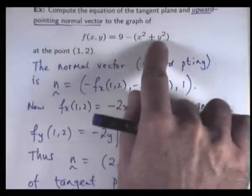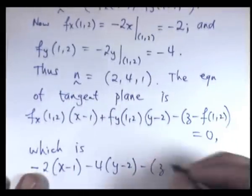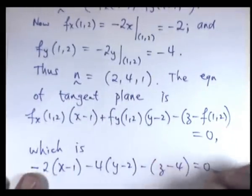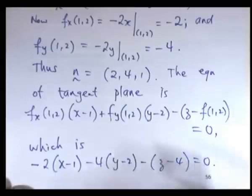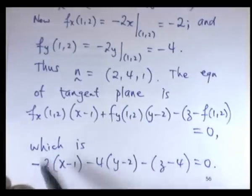So f at (1, 2), if I go up here, sub in x equals 1, y equals 2, I'll get 4. So this is the equation then of my tangent plane. Now, you can clean this up a bit, of course, and rearrange it, but I'm just going to leave it in this form because I've just about run out of room at the bottom of the page.